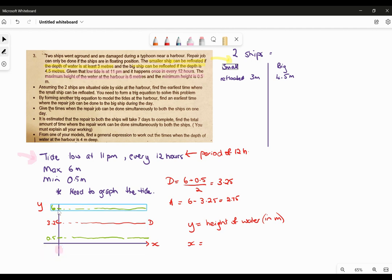So I've done a graph like this, put 6 at the top, 0.5 in the middle, and then I've worked out d, which is 3.25, and the amplitude, that's a horrible looking A, and I decided to do 6 minus 3.25, which came to 2.75.